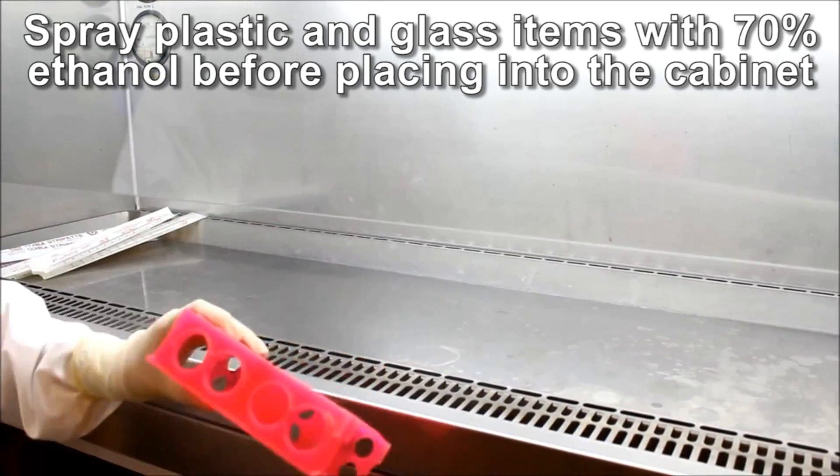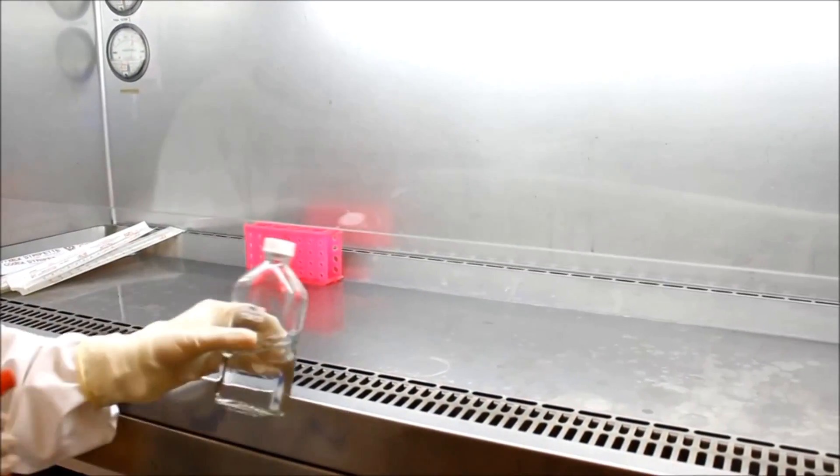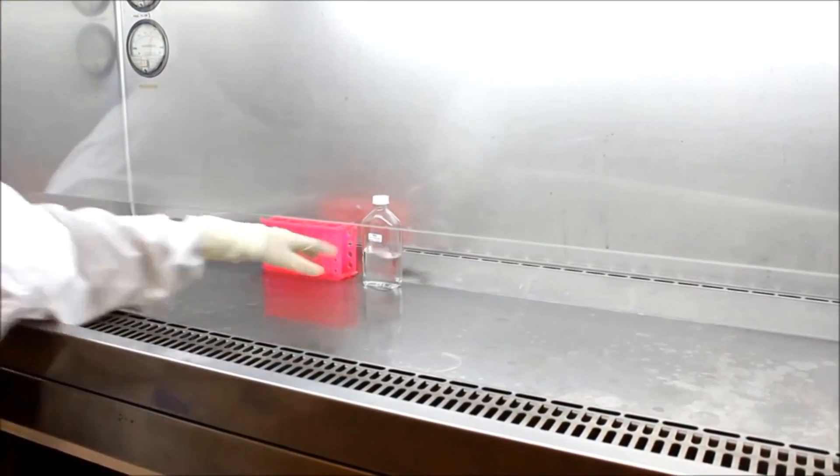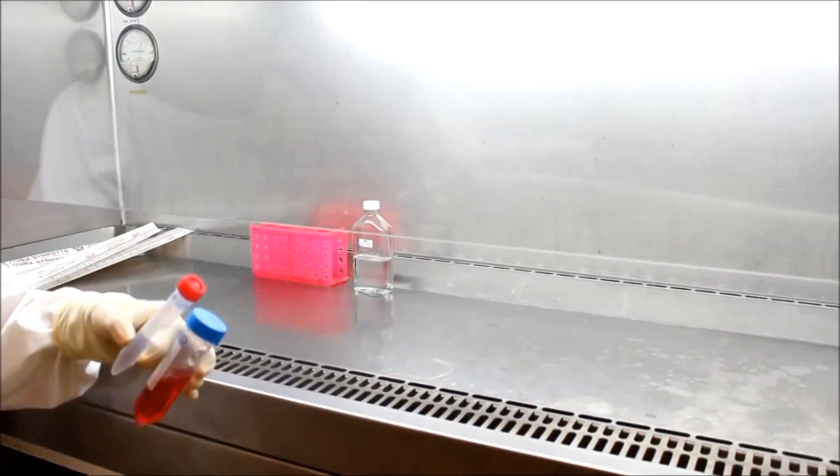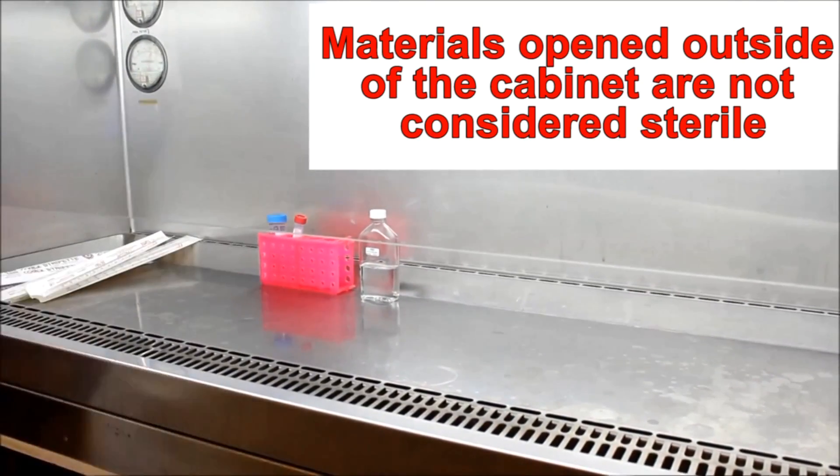Spray plastic and glass items with ethanol to sterilize them before placing them into the cabinet. Make sure lids are secure and that bottles have not been opened. Materials opened outside of the biosafety cabinet are not considered sterile.